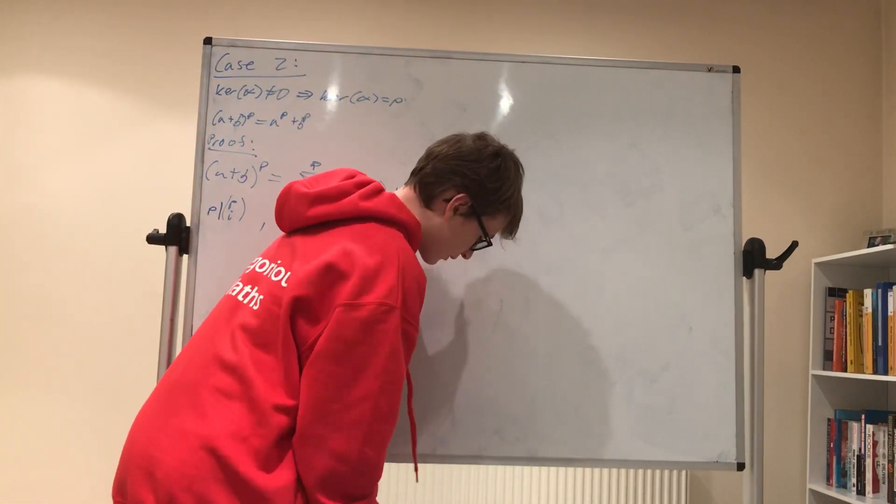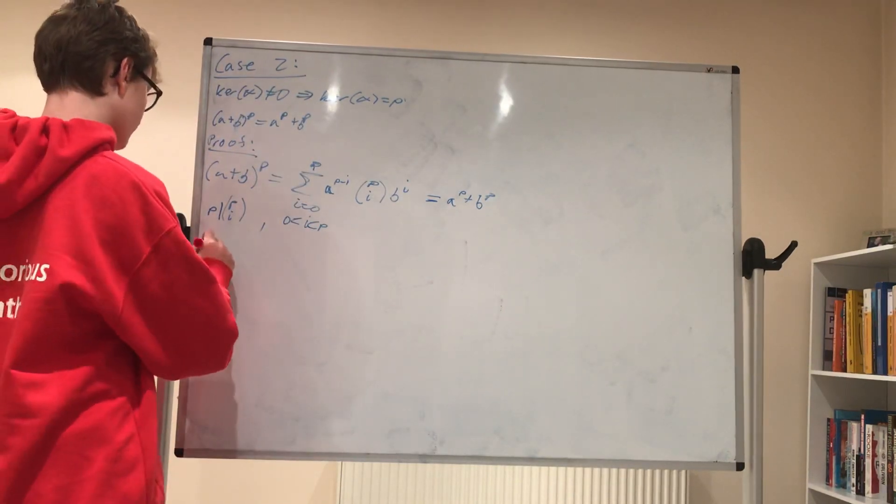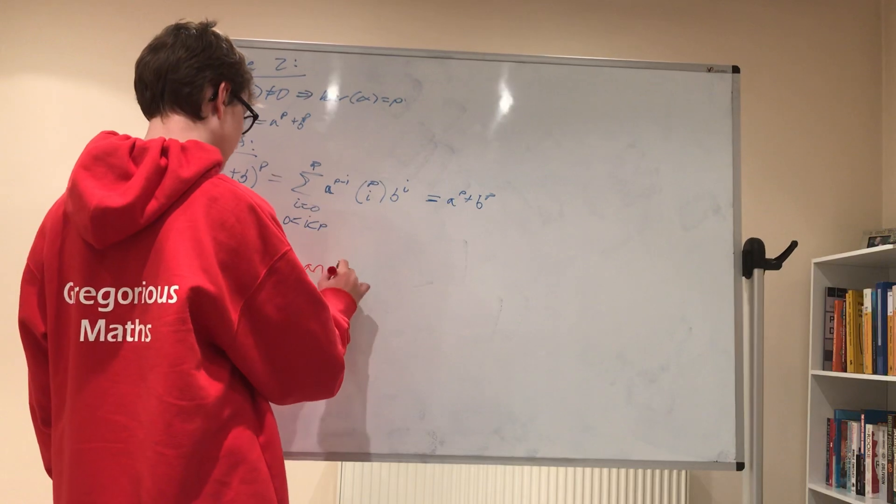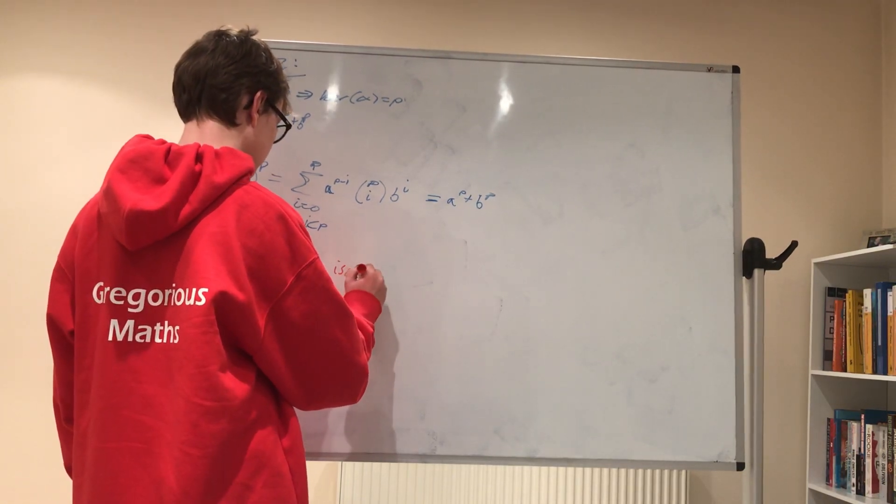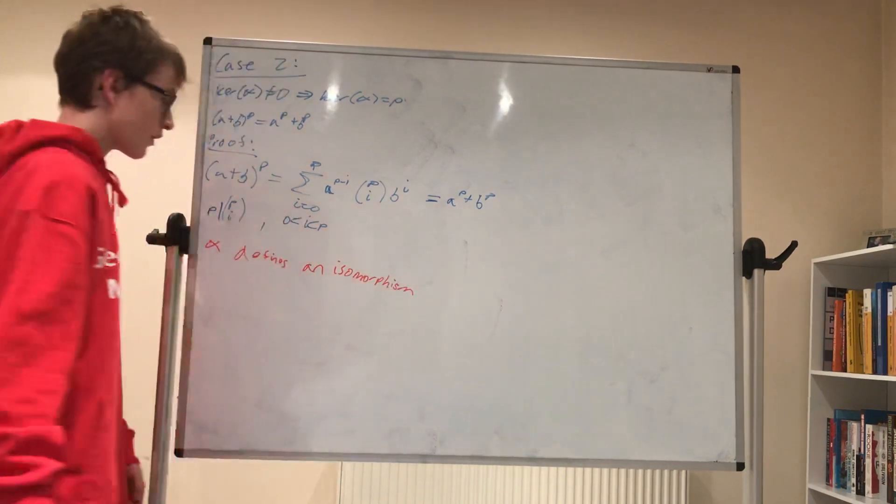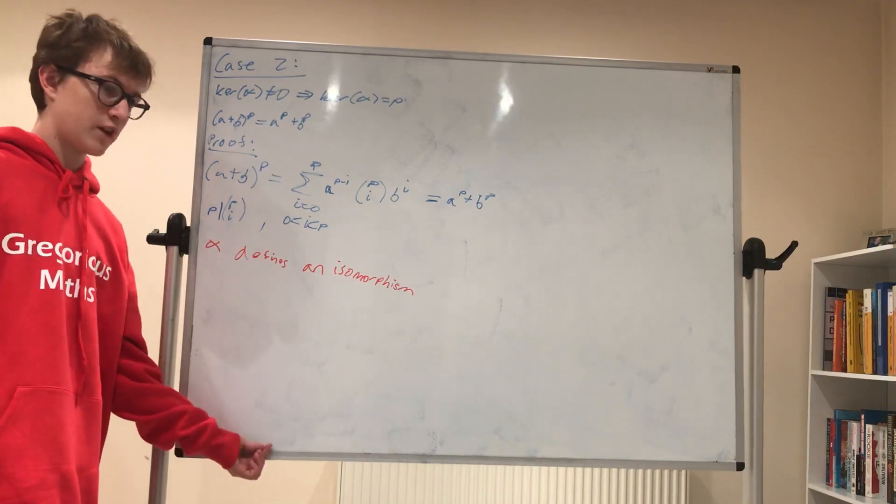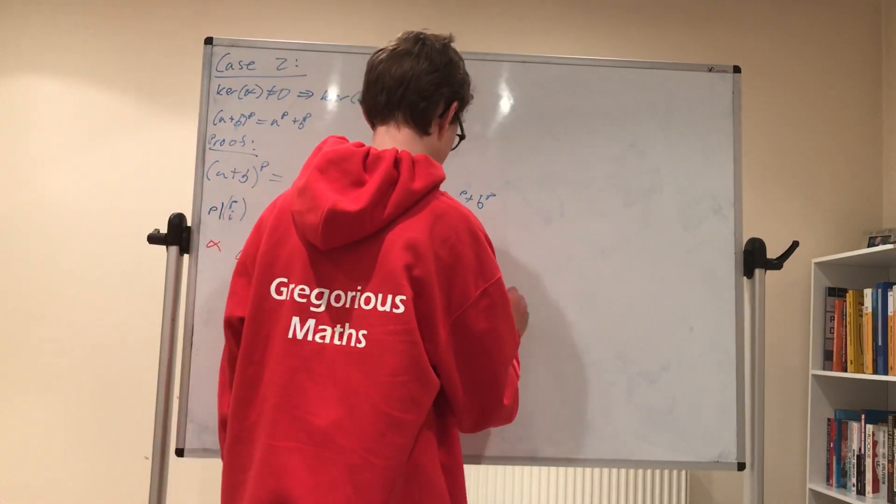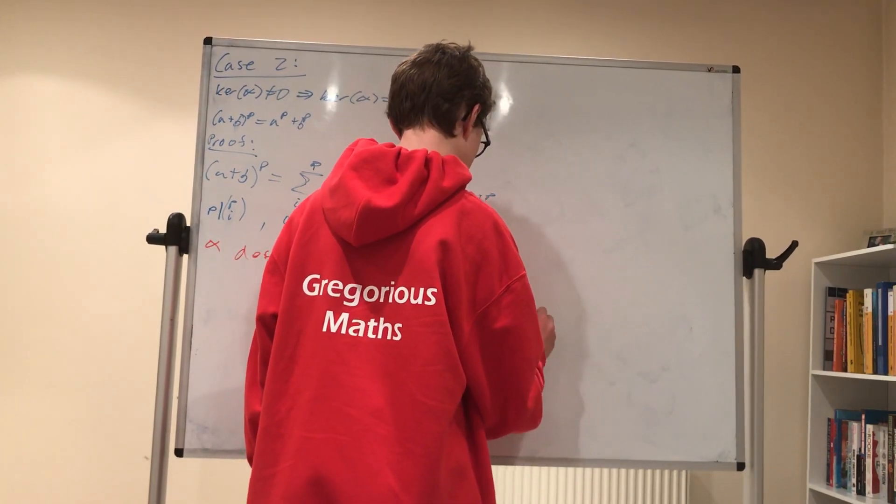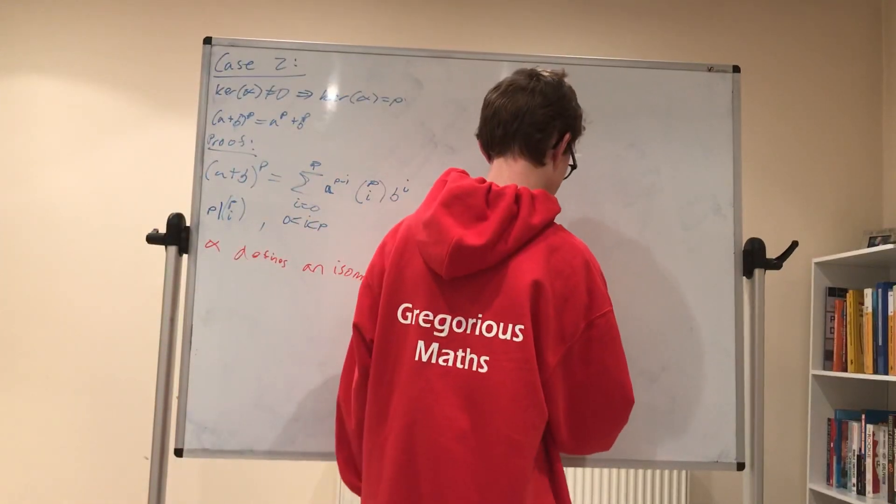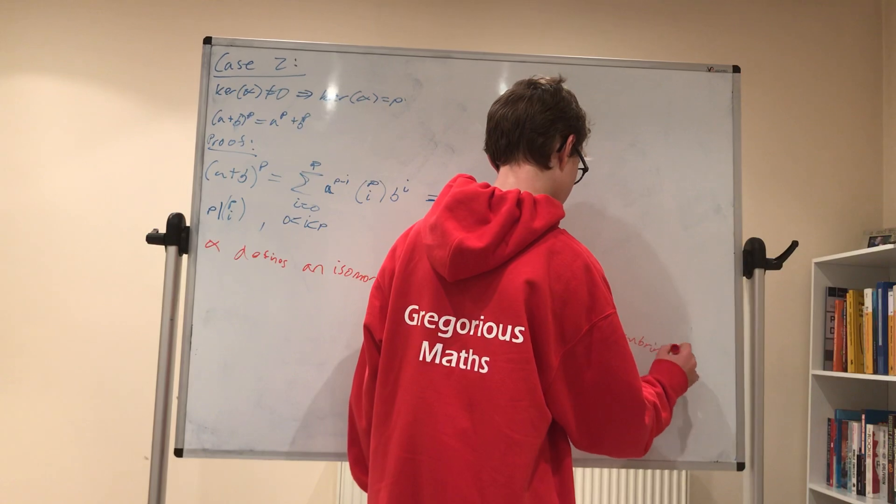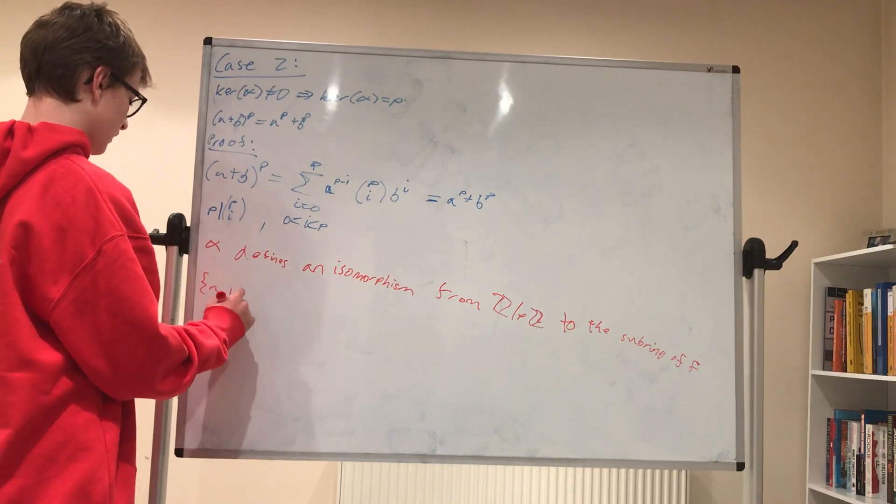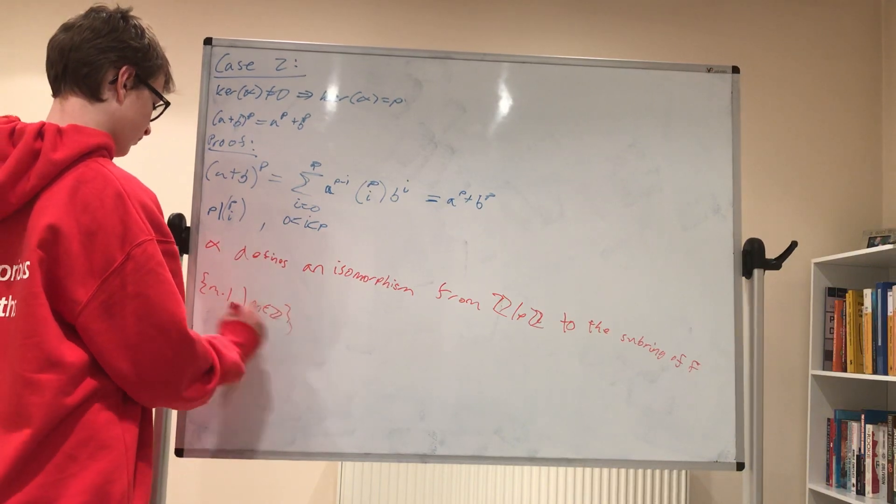Now another interesting thing is that alpha defines an isomorphism between the integers mod p to the sub-ring of f, the set of all m times one f such that m is an integer.